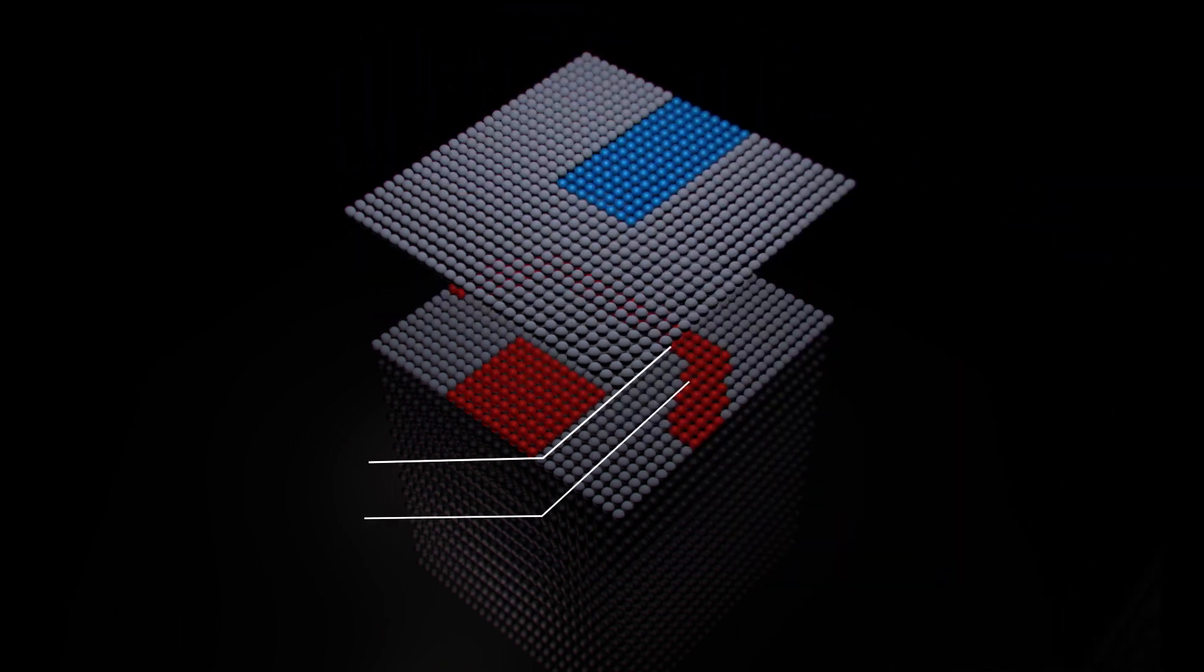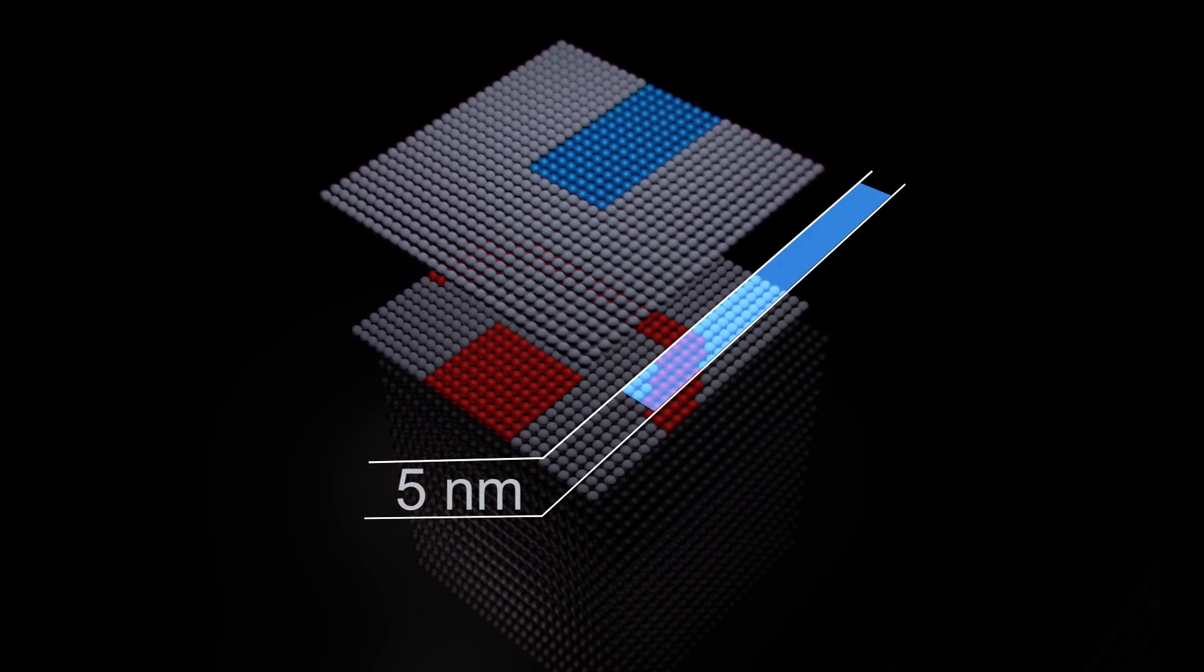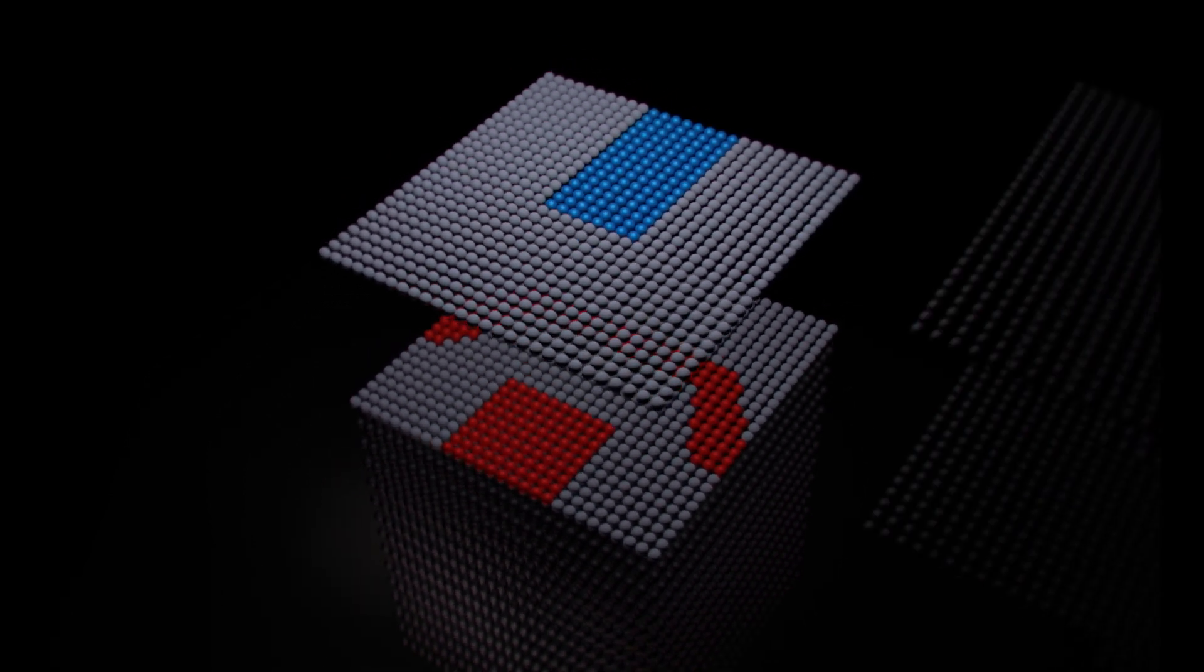If you write something on the first silicon layer and then put a silicon layer on top, you need to know exactly where you are on the surface to align components on both layers. We have demonstrated that we can realize alignment within 5 nanometers.